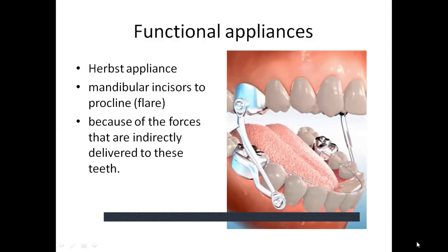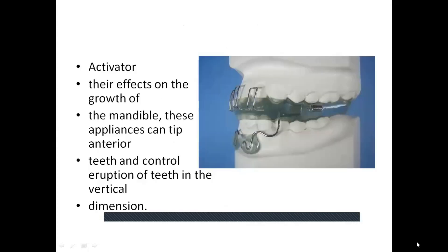The activator was the first removable functional appliance, designed to activate mandibular growth to correct Class 2 malocclusion. It consists of an acrylic body covering part of the palate and the lingual aspect of the mandibular alveolar region, with a facial bow anterior to the incisors. Facets are cut to allow distal, occlusal, and buccal movements, and these appliances can also tip the anterior teeth and control eruption.